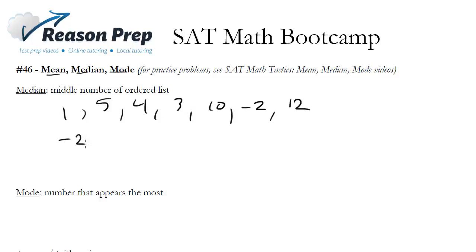So let's do that. We put them in order and we get negative 2, 1, 3, 4, 5, 10, and 12.